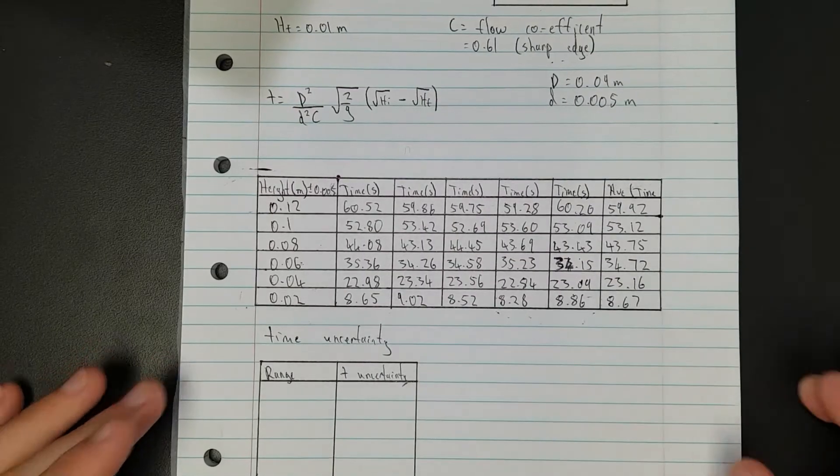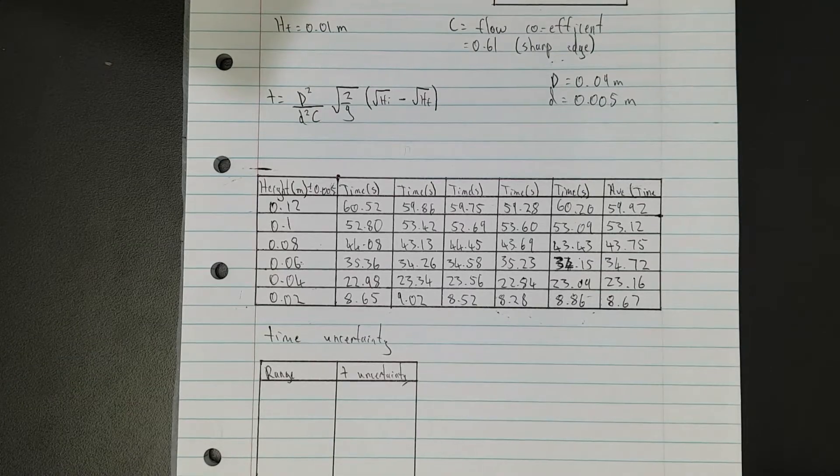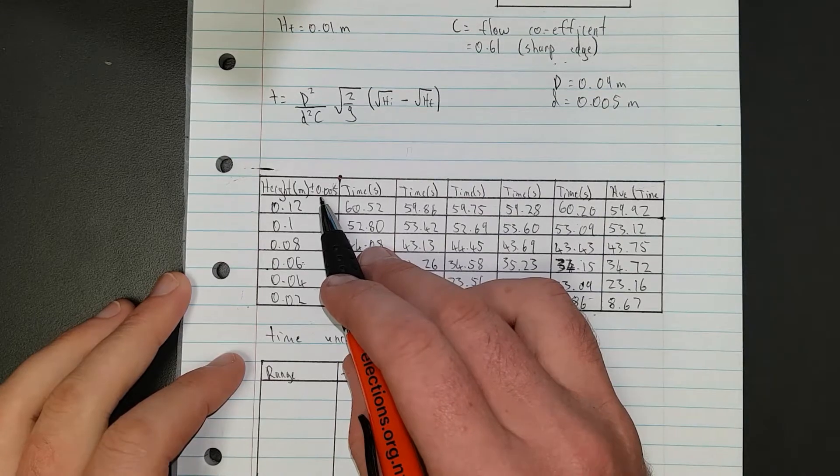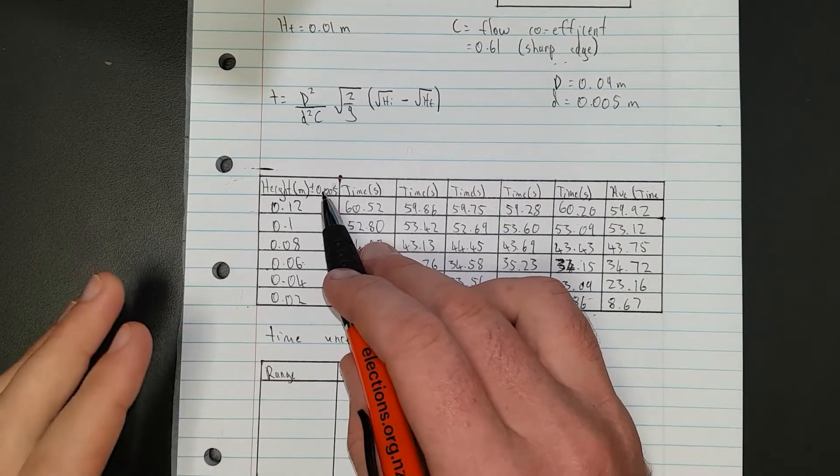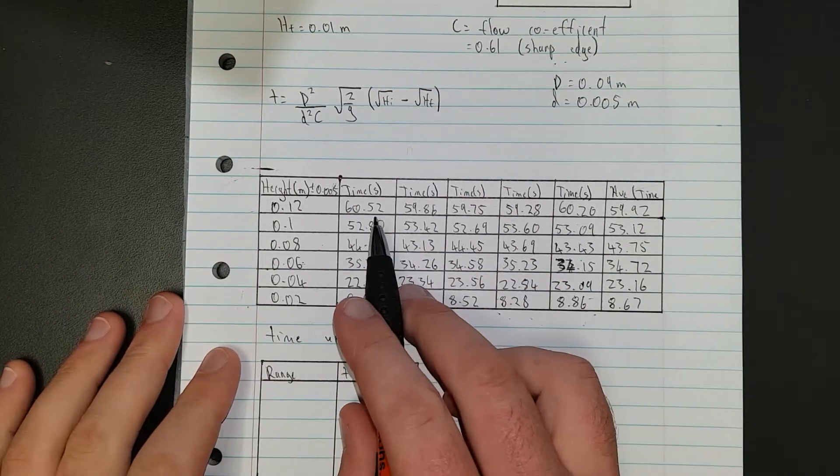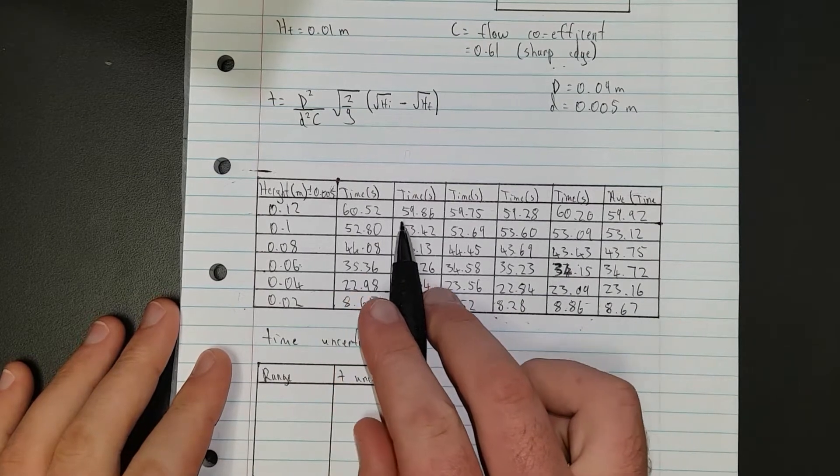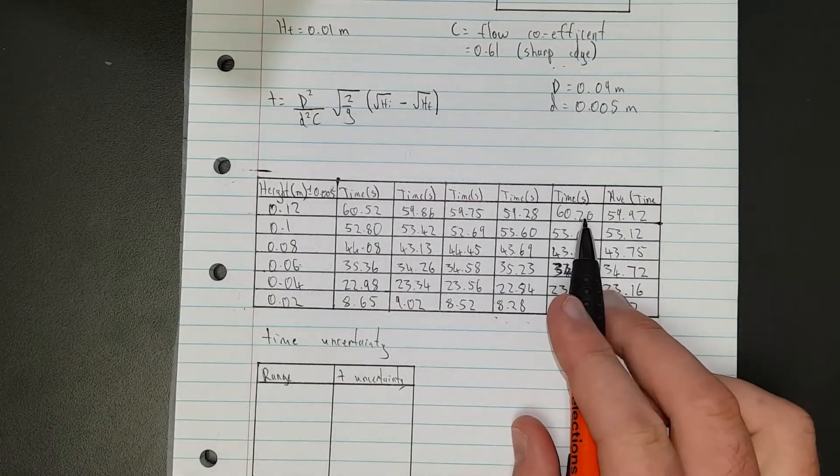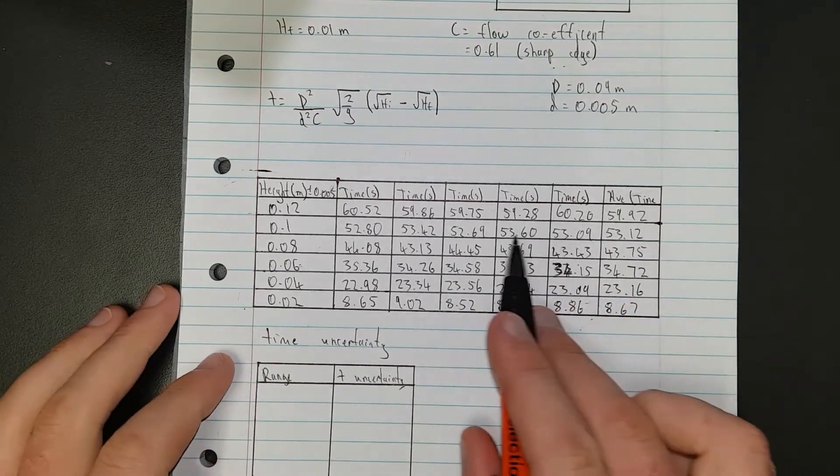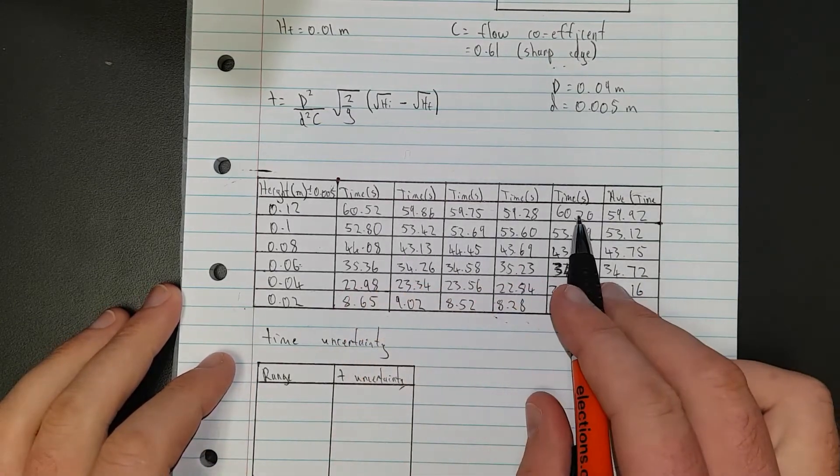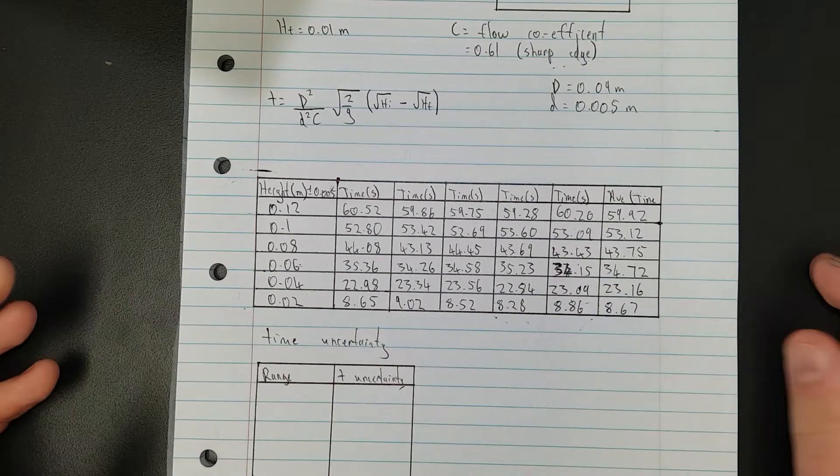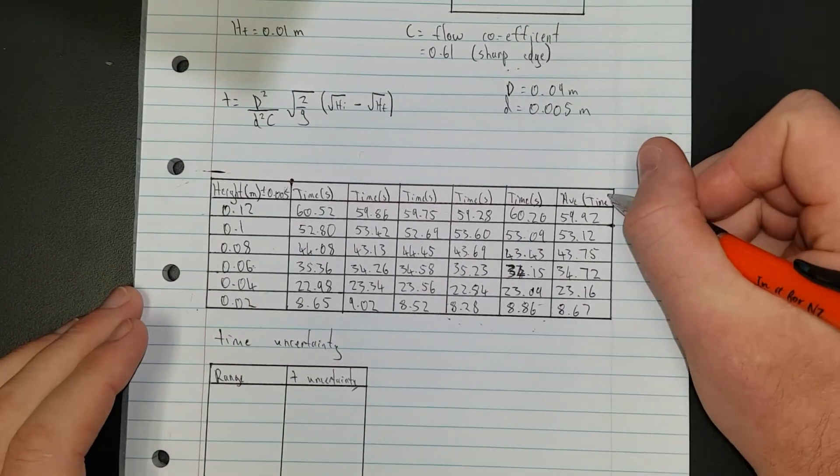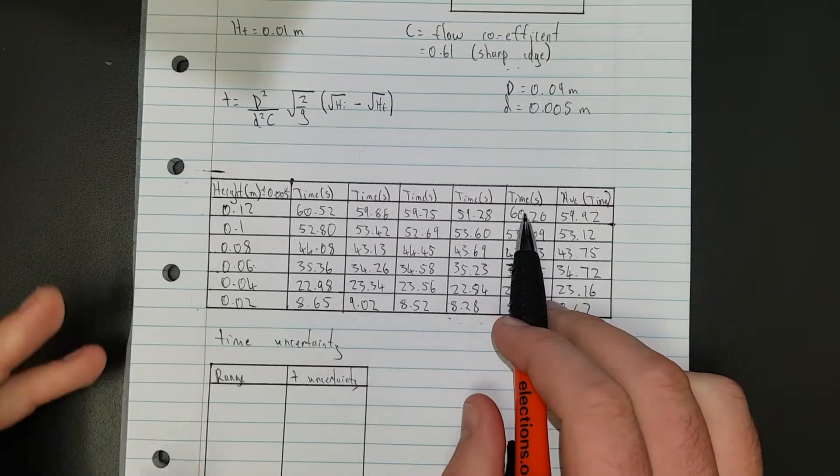As you can see I've gathered my results. I set my uncertainty for my height as half a centimeter. I've written it in meters though because everything should be in SI units. My times are fairly similar - it's quite a slow process, taking about five minutes for trial one. To take an average, you just add them up and divide by how many there are.